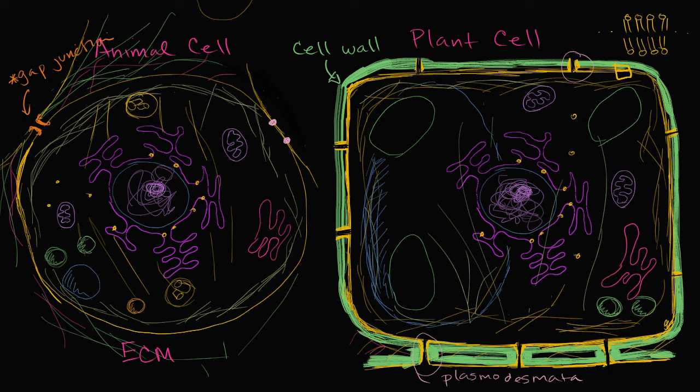Well one big thing that you might notice is this big blue balloon egg looking thing. And it doesn't contain these green things. It's really just behind these green things. And these tend to be associated with plant and fungal cells. This is a central vacuole.